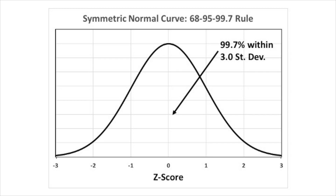The empirical rule tells us that 99.7% of observations fall within three standard deviations. So if you calculate a z-score of 3.5, 4, minus 3.5, or minus 3.8, it would be quite unusual — given that 99.7% fall within three standard deviations — to find values greater than 3 or less than minus 3.